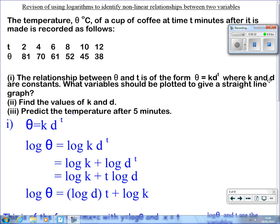Starting with θ = kd^t, take logs of both sides. Then you can use the laws of logs. The log of k times d^t is the log of k plus the log of d^t.